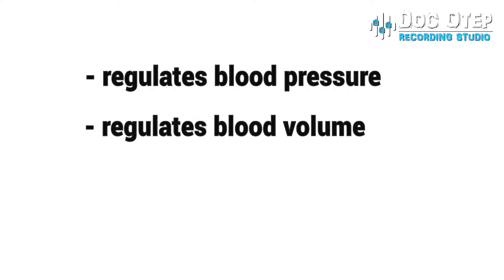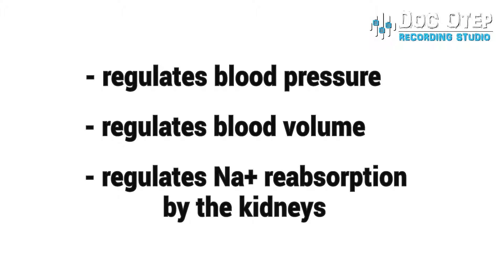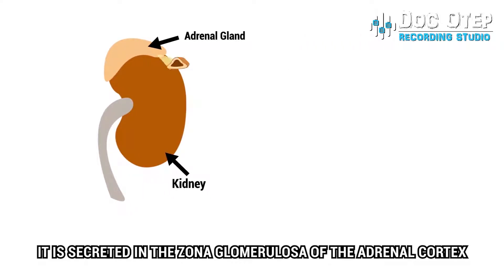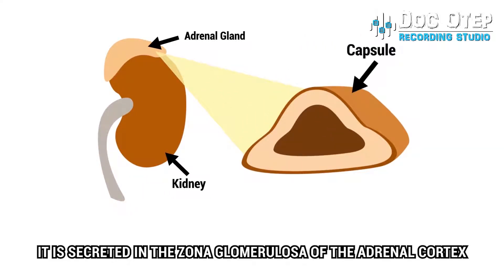Aldosterone regulates blood pressure, regulates blood volume, and it regulates sodium reabsorption by the kidneys. It is secreted in the zona glomerulosa of the adrenal cortex.